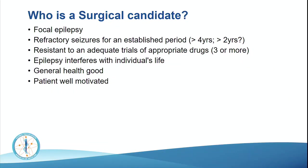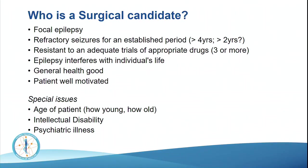The epilepsy has to interfere with the individual's life, their general health needs to be good, and they must be well motivated. There are special issues around the very young and the very old. It is now clear that in the very young the benefits are greater. Traditionally we didn't tend to operate on people older than 60, but we do now. Similarly, we often excluded patients with intellectual disability, but if you can show potential to resect the abnormal area and improve quality of life, that is worthwhile as well.